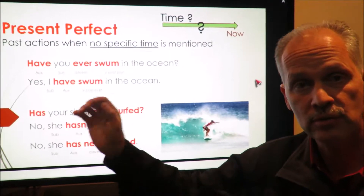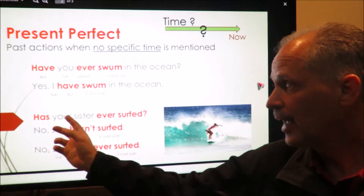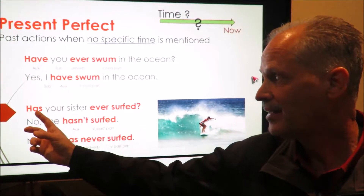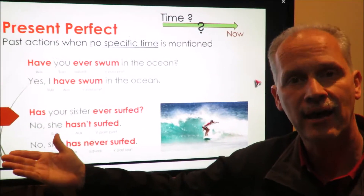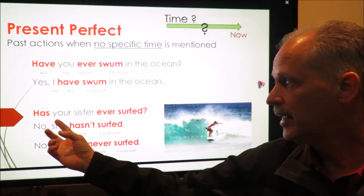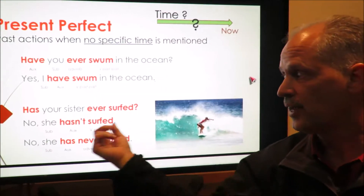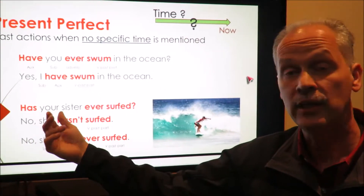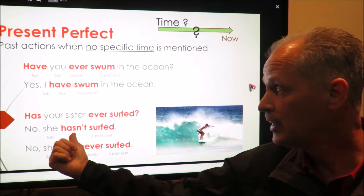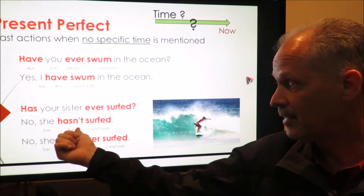In third person — for he, she, and it — we have to use the auxiliary 'has,' not 'have.' We would say: has your sister ever surfed? And you can say yes, she has, or no, she hasn't surfed. This would be the negative.